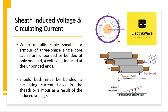When metallic cable sheaths or armor of three-phase single-core cables are unbonded or bonded at only one end, a voltage is induced at the unbonded ends. Should both ends be bonded, a circulating current flows in the sheath or armor as a result of the induced voltage.